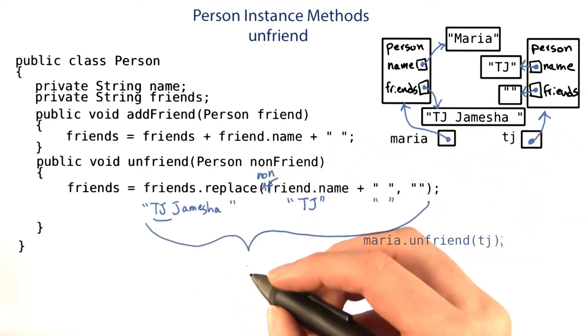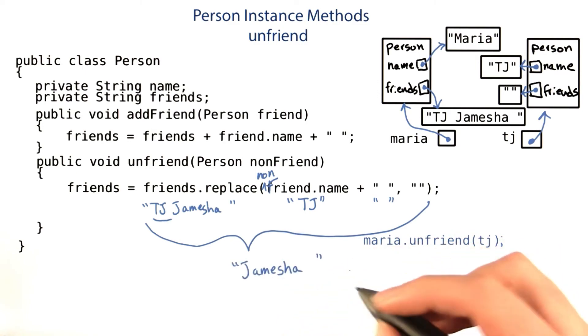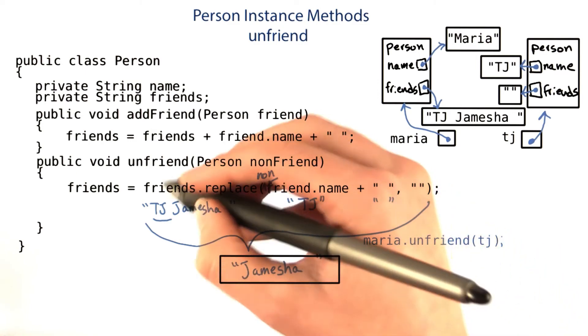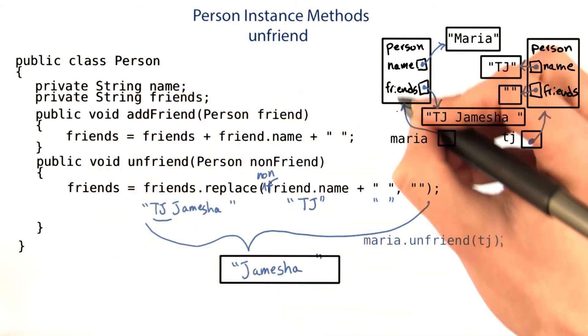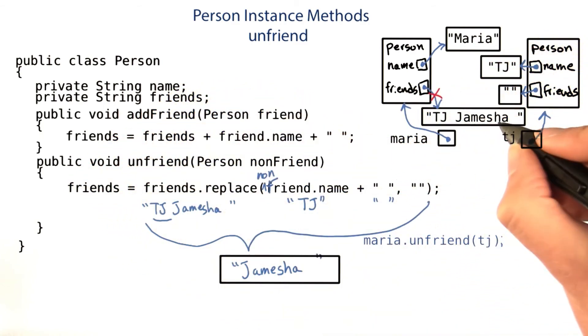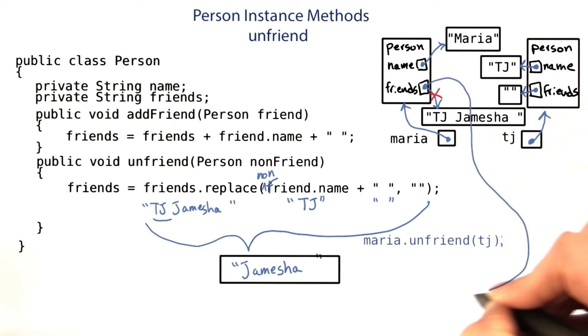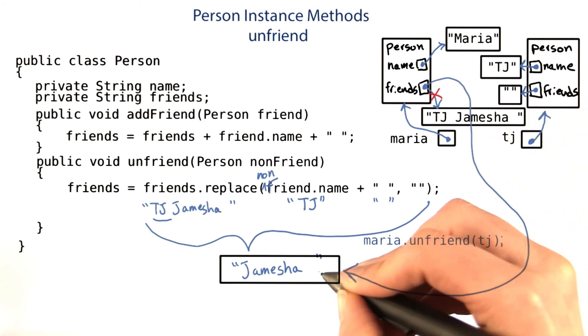So this creates a new string, Jamisha with a space. And now, we take that string, and we make friends, which again was Maria's friends, stop pointing at TJ Jamisha, and point at just Jamisha with a space.